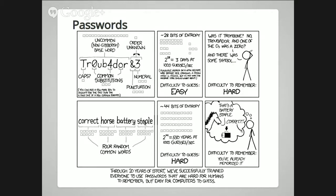Passwords are used to authenticate to any system. One method of designing passwords is using a passphrase like the 'correct horse battery staple' approach. You can also remove a random letter from each word to make it more resilient to dictionary attacks. A dictionary attack exploits the fact that people tend to use passwords they can remember, and everybody tends to remember the same kinds of things, so you can design an attack that specifically targets those patterns.